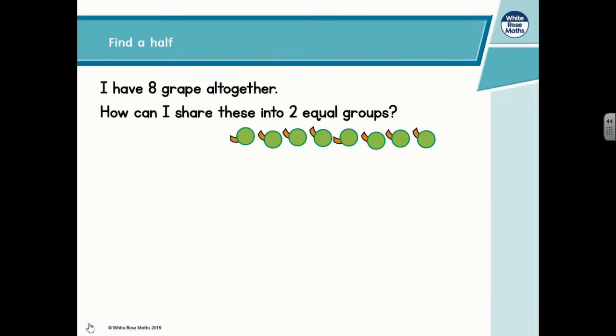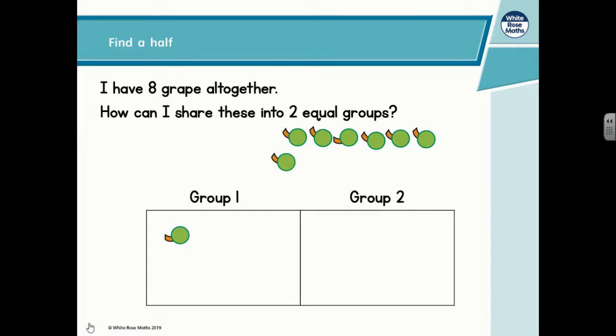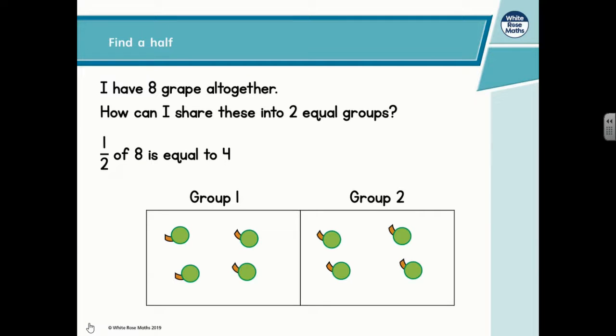I have eight grapes here altogether. But it doesn't have to be grapes. It can be anything if you're doing this at home or at school. What I want to know is how can I share these into two equal groups? Can you see? I'm taking one at a time and sliding one into group one and one into group two until all of the grapes have gone. I have four in group one and four in group two. They are two equal groups. One half of eight is equal to four.